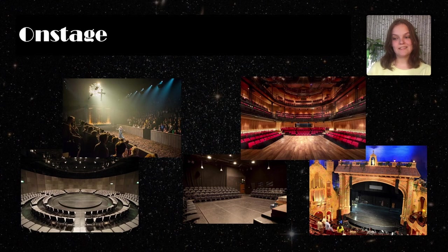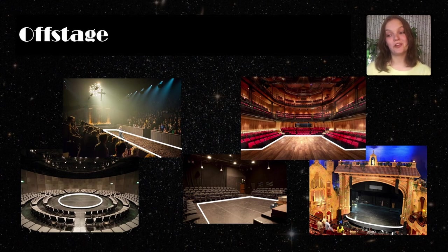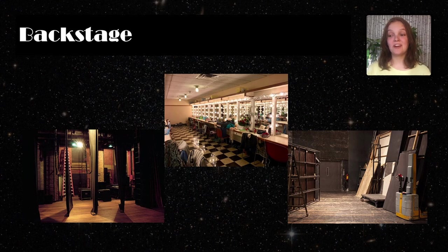On stage is anywhere where an actor is visible to the audience, and off stage is where you are no longer visible to the audience. So when an actor exits the stage, they go offstage. The deck is a common term for the stage floor. The term backstage refers to the actual area behind the stage, such as the dressing room, while off stage can refer to any part that is not on the stage — it's not specific.